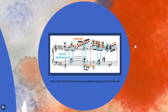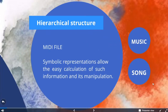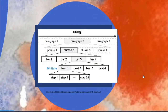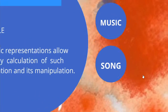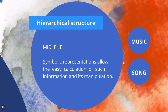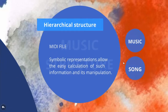As the picture shows, a sound follows a hierarchical structure. It is composed of several paragraphs, and each paragraph can be divided into four phrases. Each phrase has four bars, and if the music is four-by-four measured, there will be four beats. In our project, we use a symbolic music form like MIDI files. A MIDI file is short for Music Instrument Digital Interface file. It is a symbolic representation of music, which allows easy calculation of such information and its manipulation.